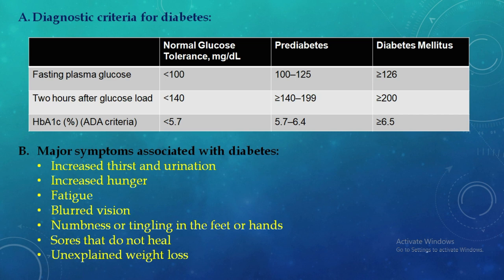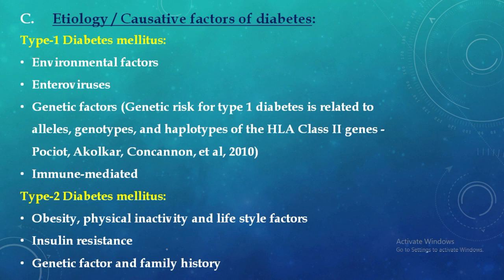Major symptoms of diabetes include increased thirst, increased urination, increased hunger, fatigue, blurred vision, numbness and tingling in the feet or hands, sores that do not heal, and unexplained weight loss. Regarding etiology, in type 1 diabetes the causative factors are environmental factors, enteroviruses, genetic factors especially HLA class 2 genes, and immune-mediated destruction — which is why it is called IDDM.